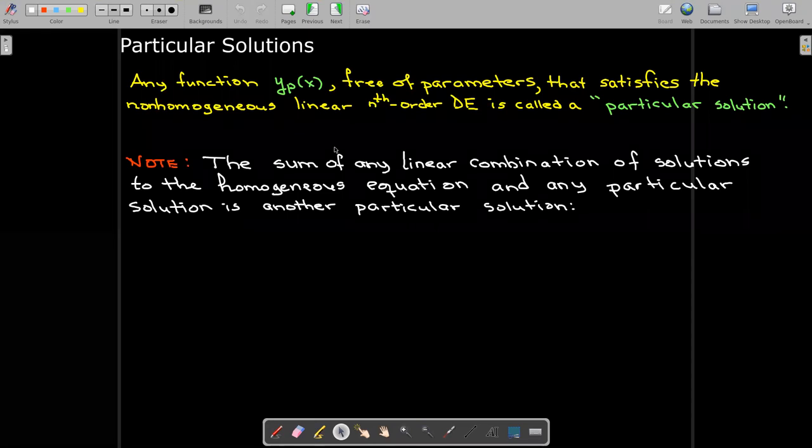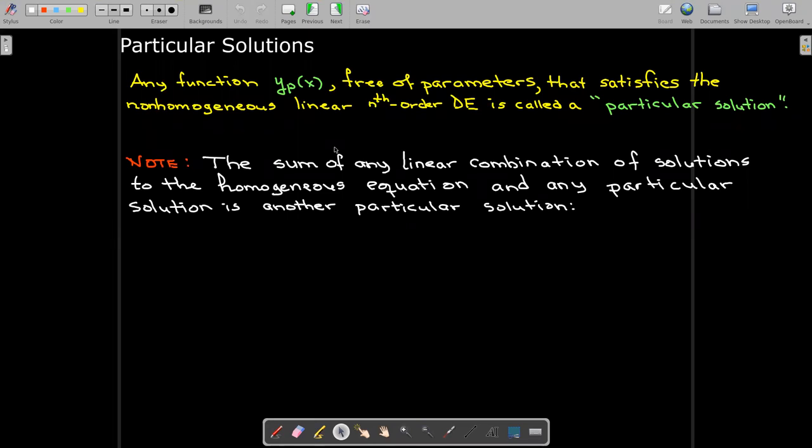You can take any linear combination of solutions to the homogeneous equation, the corresponding homogeneous equation, and any particular solution, and you'll get another particular solution.